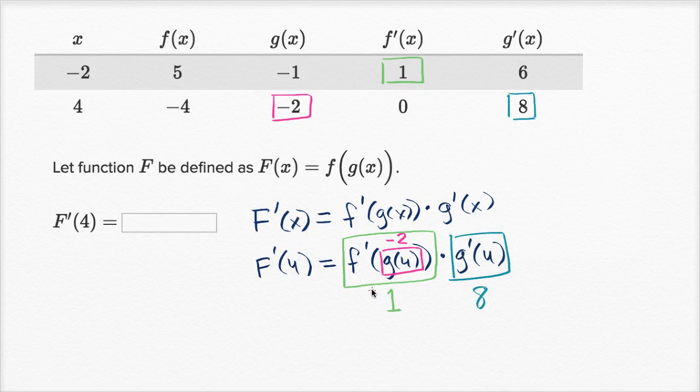So there you have it. F prime of four is equal to one times eight, which is equal to eight. And we're done.